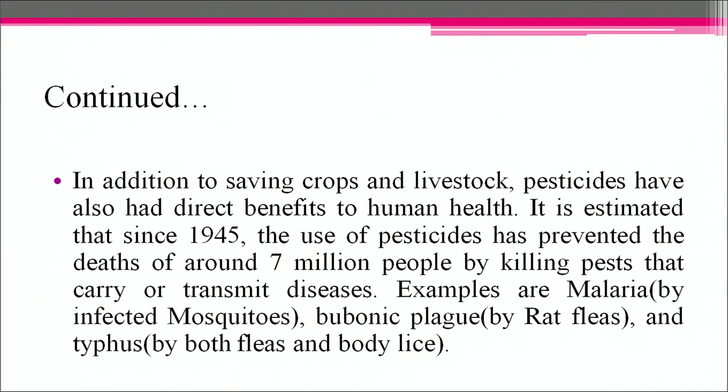In addition to saving crops and livestock, pesticides have also had direct benefits to human health. It is estimated that since 1945, the use of pesticides has prevented the death of around 7 million people by killing pests that carry or transmit diseases. Examples include malaria, bubonic plague and typhus.